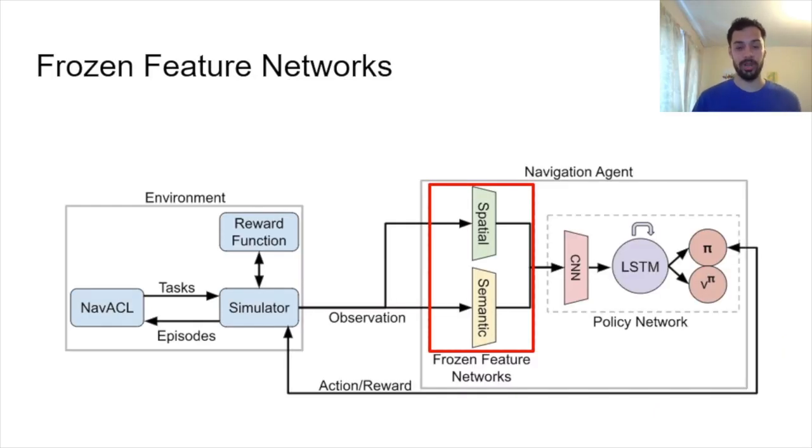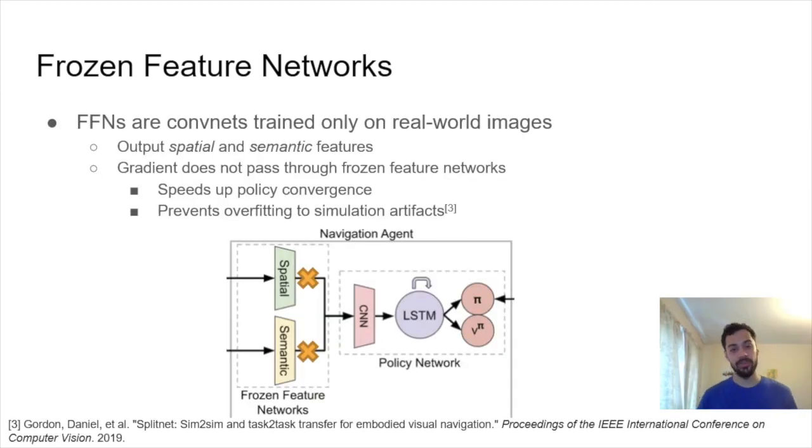Jumping back, let's talk about our frozen feature networks. Our frozen feature networks are convolutional neural networks that are trained only on real images. Our networks output spatial and semantic features. The gradient during policy learning does not actually pass through these frozen feature networks, hence the term frozen. The weights are frozen; they do not change from gradient descent. Those are denoted here with these little orange x's that stop gradient propagation. This has two main benefits. First, it speeds up policy convergence because we don't actually have to learn these spatial and semantic features—they're pre-trained. And it also prevents overfitting to simulation artifacts, which I'll describe in the next slide.